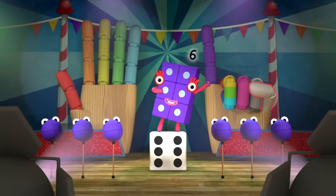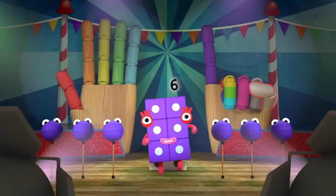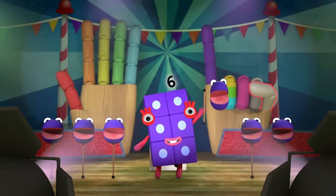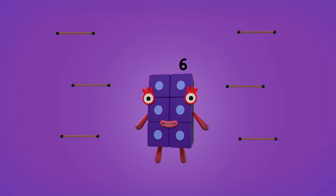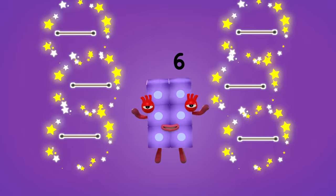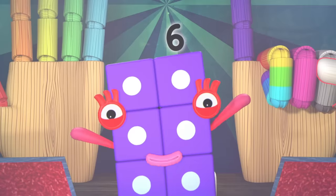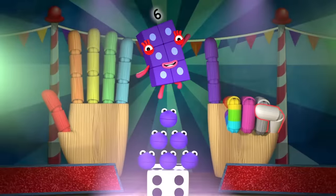Five numberblocks and me, counting everything we see. Picking up a stick. Six numberblocks and me. One, two, three, four, five, six, six sticks. One, two, three, four, five, six, six tricks. Six numberblocks and me.